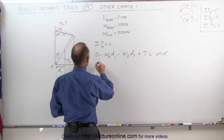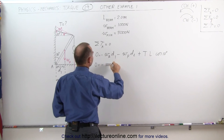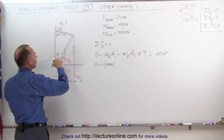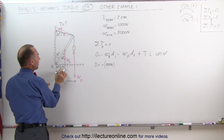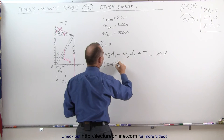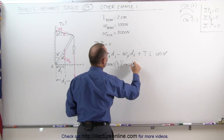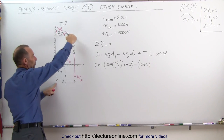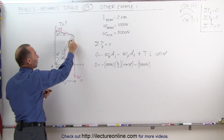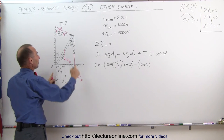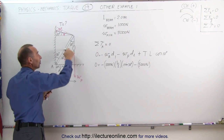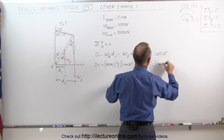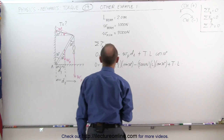Now we're ready to plug in the numbers. Zero equals minus the weight of the beam — that's 1,000 newtons — times D1. D1 can be found using the 30-degree alternate interior angle: the hypotenuse is half the beam length, and D1 is opposite the 30-degree angle, so D1 equals L over 2 times sine of 30 degrees. Minus the weight of the fish — 5,000 newtons — times D2. D2 uses the full beam length as hypotenuse with the same 30-degree angle: D2 equals L times sine of 30 degrees. Plus the tension times the length of the beam times cosine of 10 degrees.